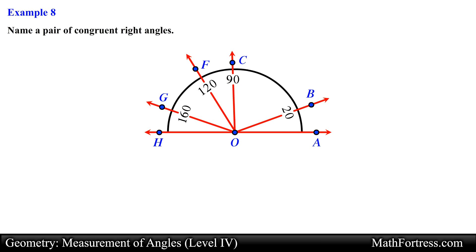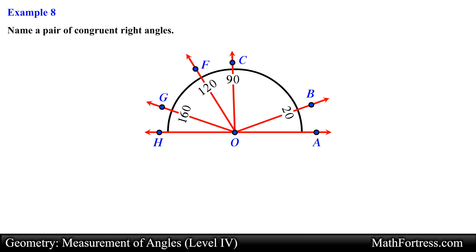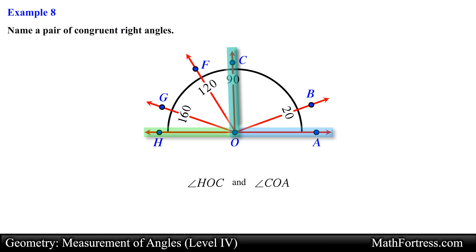Name a pair of congruent right angles. We need to identify two congruent angles that measure 90 degrees. Looking at the diagram, angle HOC and angle COA both measure 90 degrees, so these angles are congruent right angles.